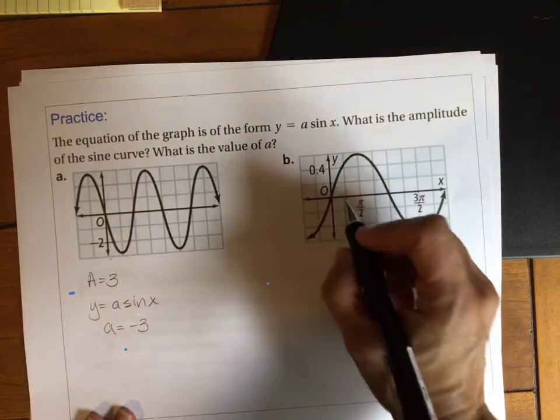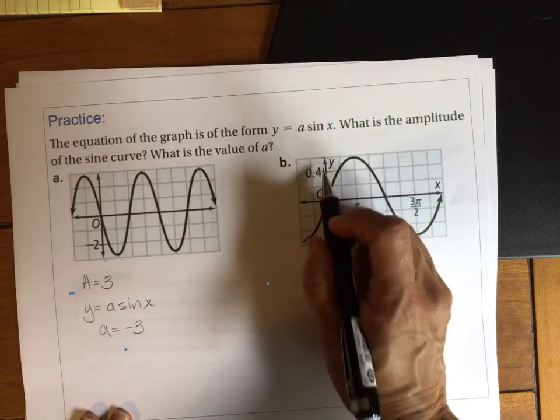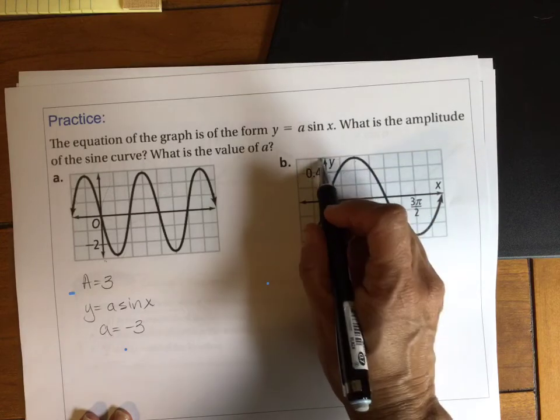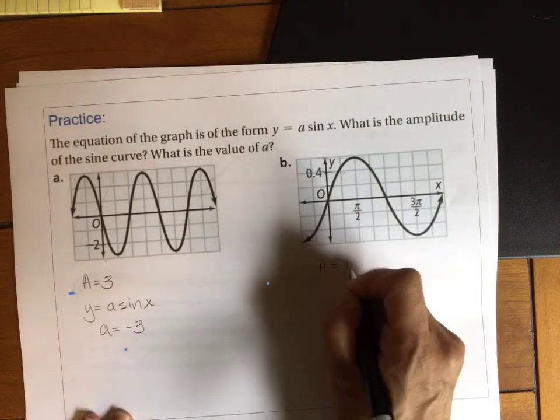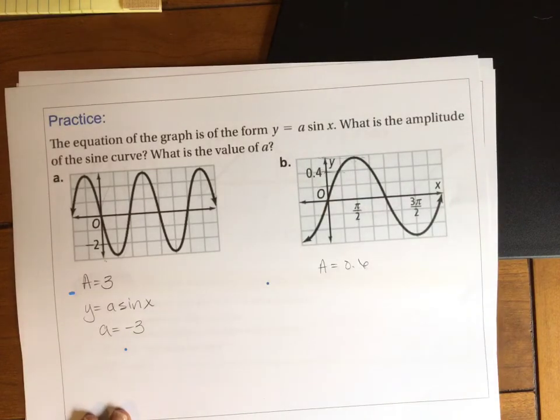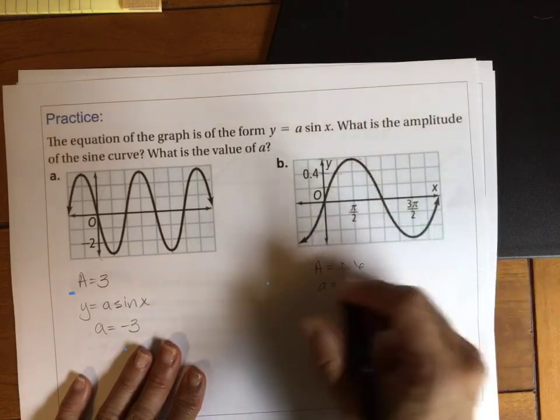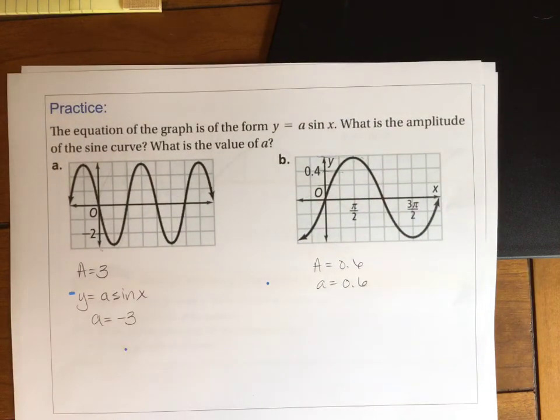Here, the different sections on the grid, we're going by 0.2. So if this is 0.4, then this is 0.6. So my amplitude is 0.6. My A value is not going to be any different because it's not reflected.